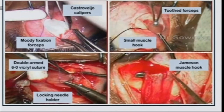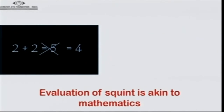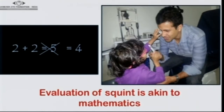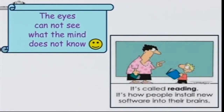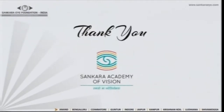It is also important to have a pair of Moorfields fixation forceps so you can avoid using an assistant and do the surgery yourself. Evaluation of squint is akin to mathematics where 2 plus 2 is always 4. Beyond all this, it's not the equipment which makes a difference but how we interpret it. As the saying goes, the eyes cannot see what the mind does not know.